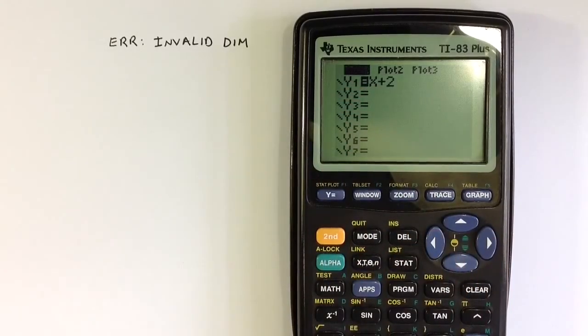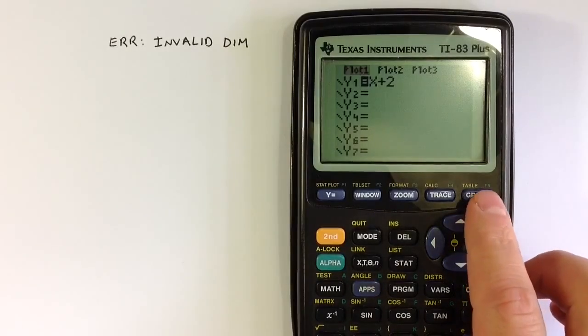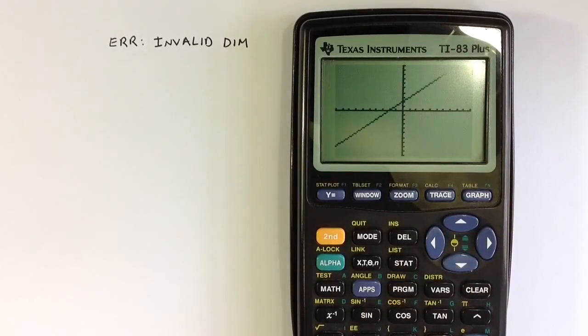If I hit enter, it turns off that stat plot and now hitting the graph key produces the graph that I was looking for of x plus 2.